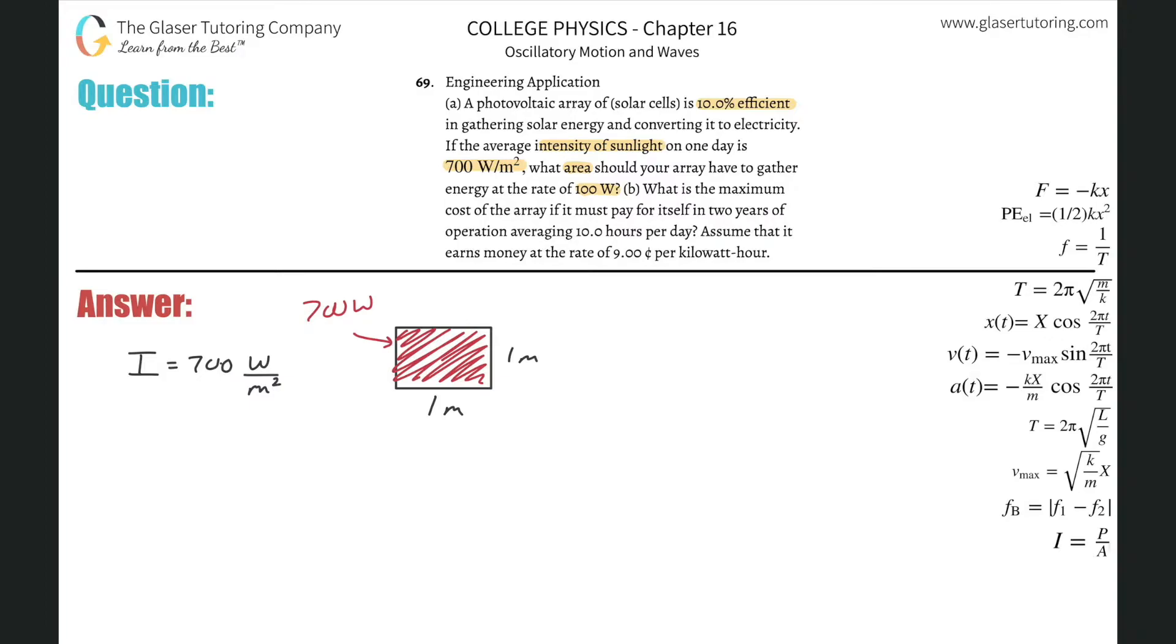So that would be the case if they were 100% efficient, that whatever sunlight was beaming down on this particular area, we'd be able to capture all of it. However, we're assuming that the photovoltaic cell is 10% efficient. So what do you think that means? Well, that basically means now that in the same area, we're not going to be able to capture all of that power.